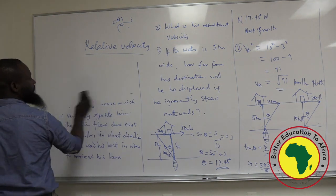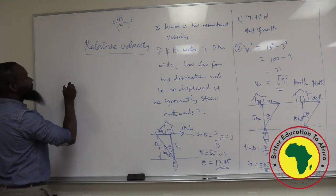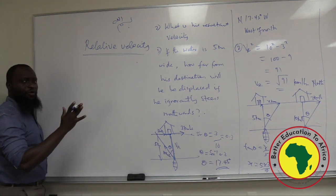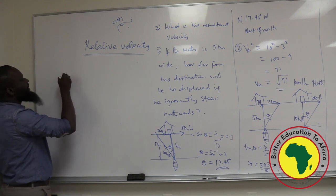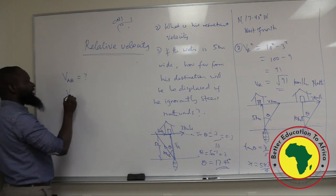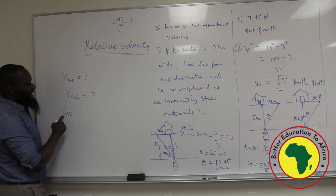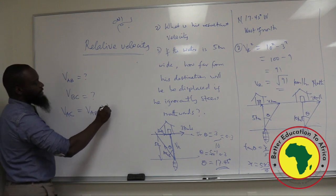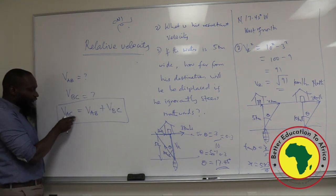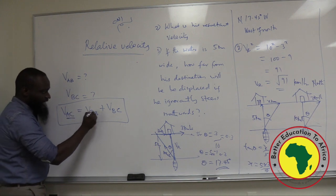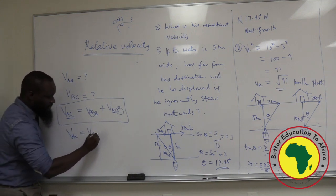How does this relate to relative velocity? This is why we do this in motion in two dimensions. When I have velocity of A relative to B, and velocity of B relative to C, I can find velocity of A relative to C. V-AC equals V-AB plus V-BC. When I have double relativity from A to C, I start with A and end in C. Also remember V-AC equals velocity of A minus velocity of C.